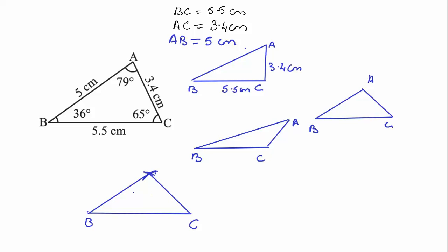You would be able to see that this is my BC of 5.5 centimeters with the help of a ruler. Now I'll have AB of 5 centimeters through an arc, and then AC of 3.4 centimeters through an arc. In this case, I have just got one single point of A.